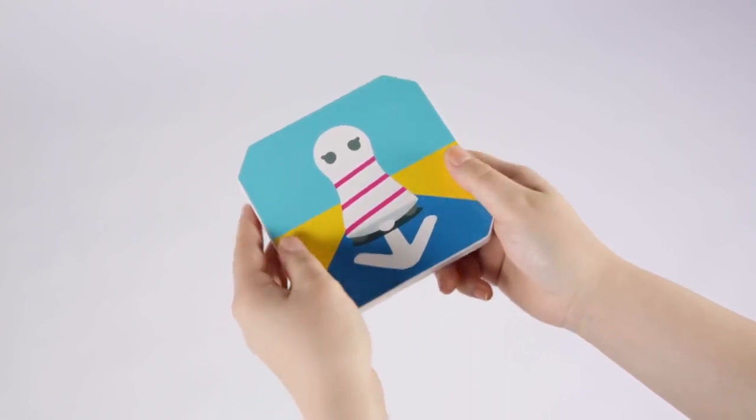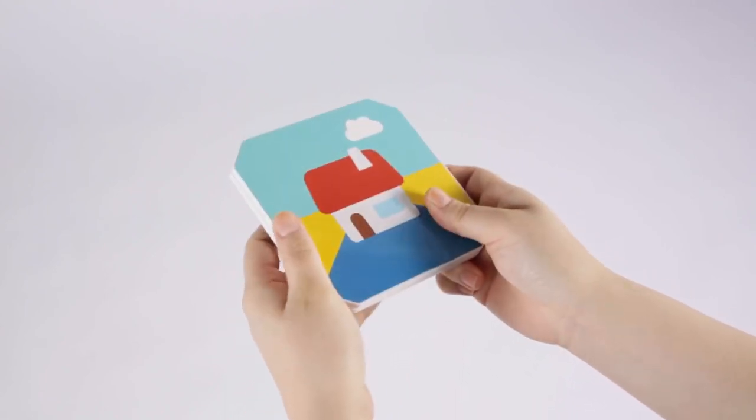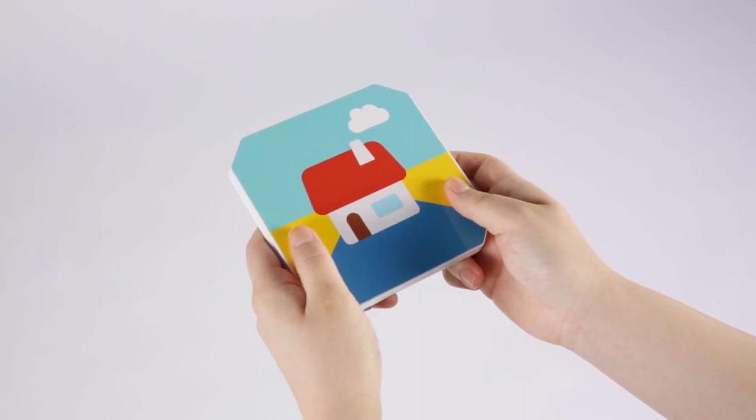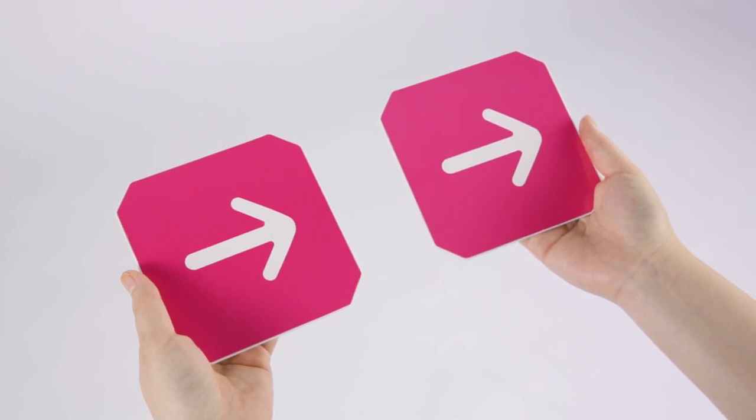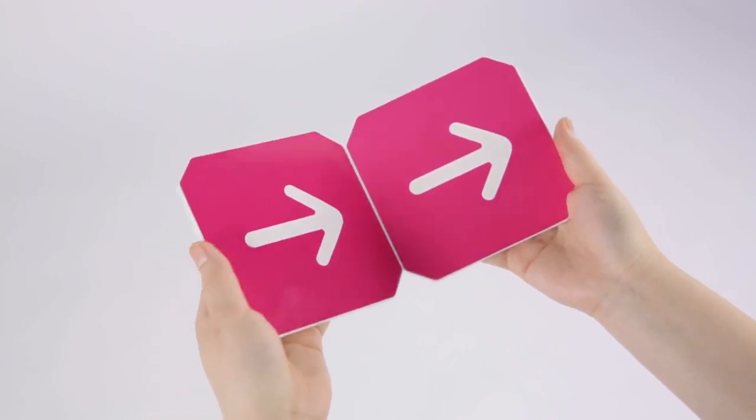To avoid losing the start and goal panels, put them away back to back so that the pictures are on the front. For other panels, put them away with the picture side inside.